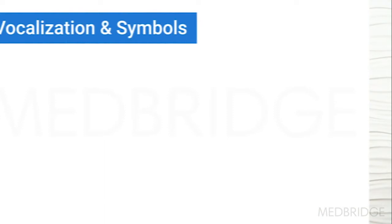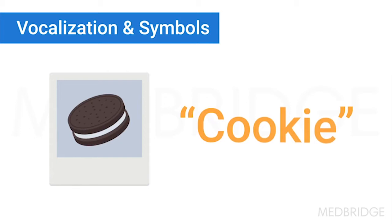Maybe we're talking about a vocalization. We can get into more concrete symbols — so a photograph that looks exactly like what it stands for. I point to this picture of cookies, and I know that that's going to mean cookies, versus a more abstract symbol: I point to this picture of a jumping frog, and that means go.